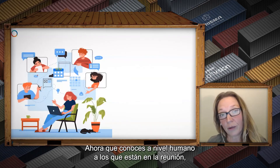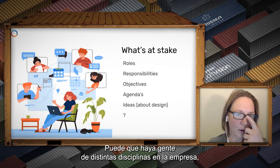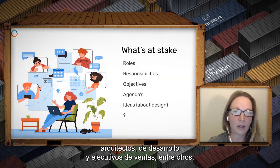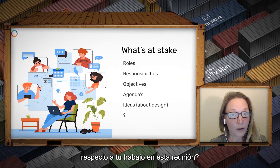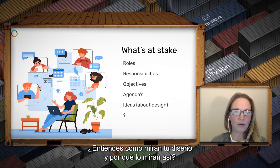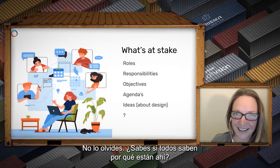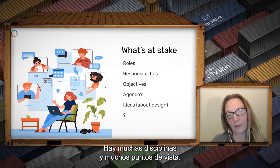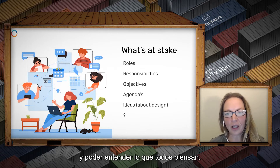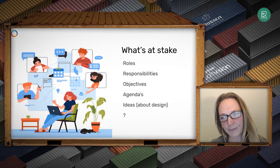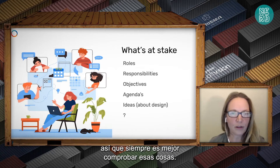Now that you know who's in the room at a human level, you need to check who's in the room at a professional level. What's at stake? There can be people from any kind of discipline — domain experts, other designers, architecture, development, business, sales. What is their role? What are their objectives with your work or this particular meeting? Is there somebody in the room with a particular agenda? Do you understand how they look at your design and why? The objectives of the stakeholders may be evident, but perhaps they're not. You may be operating on assumptions, so it's always good to check.